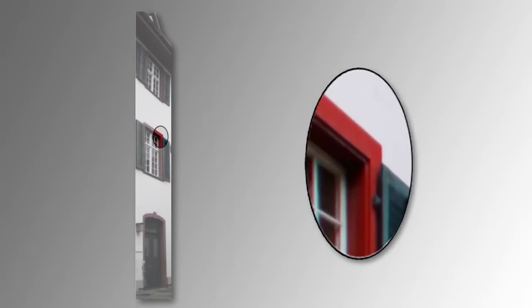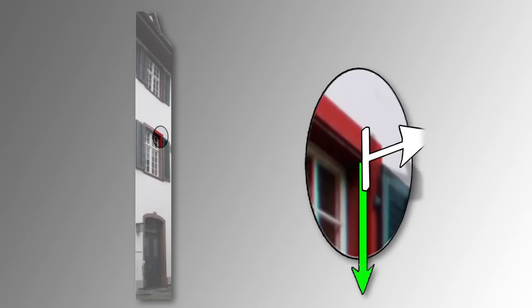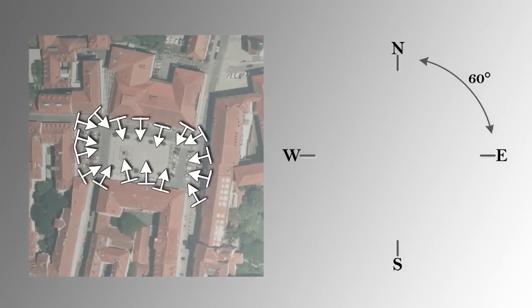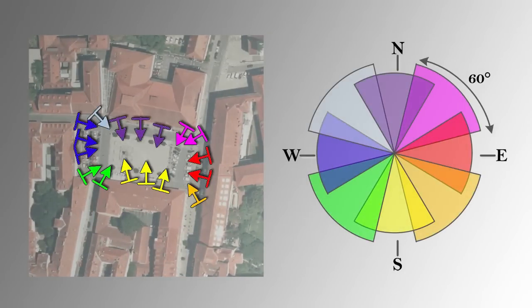Using structure from motion, for each 3D feature a descriptor is calculated by considering gravity. Additionally, a normal vector is estimated reflecting the patch orientation in 3D space. Considering the normal vector, all features are divided into slightly overlapping bins, based on their orientation with respect to north.